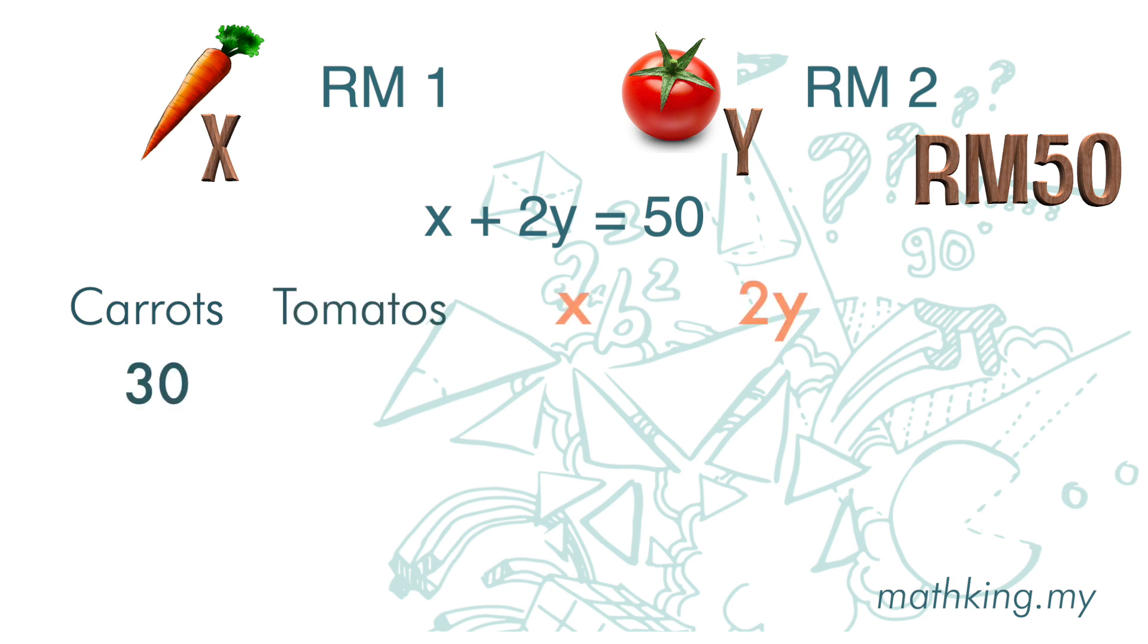If you buy 30 carrots, you can still buy 10 tomatoes. 30 carrots is 30 ringgit. For tomatoes, 2 times 10 we get 20. Total is 50.